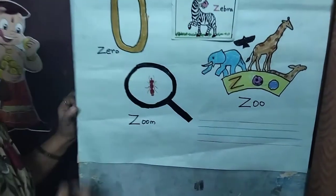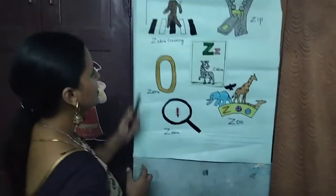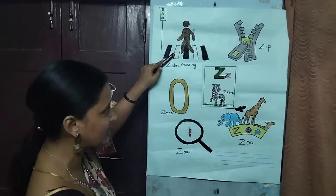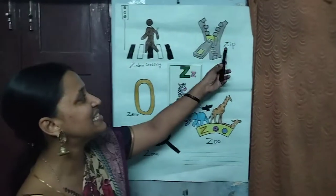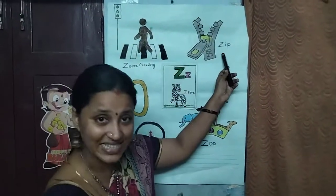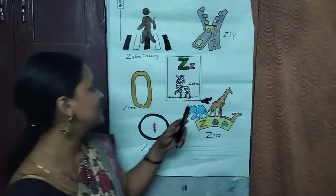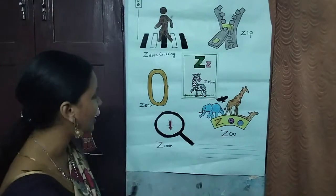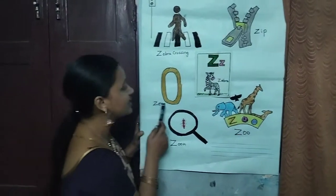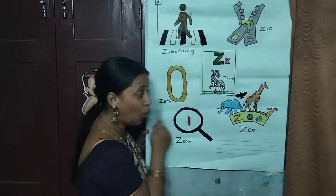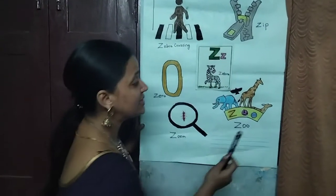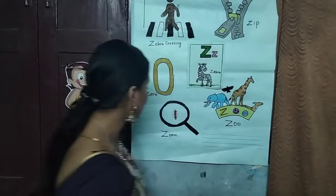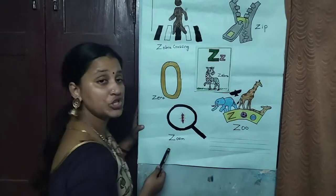So we will take a quick recap. Z — zebra crossing. Z — zip. Z — zebra. Z — zero. Z — zoo. Z — zoom.